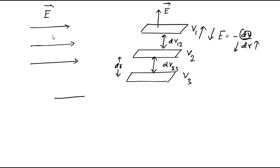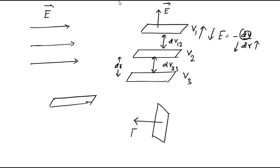The more crowded the equipotential surfaces are, the stronger the electric field intensity. The equipotential surfaces also tell us the direction of electric field, because the electric field vector is always perpendicular to the equipotential surfaces. Wherever we identify an equipotential surface, we are certain that the electric field line will be normal or perpendicular to that surface.